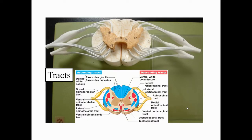The funiculi are divided into tracts, which we covered in lecture. Most funiculi have both ascending and descending tracts. In this diagram, ascending tracts are labeled blue and descending tracts are labeled red. On the model there are no colors or labels, so rather than using the model we're going to use a diagram to learn these tracts.